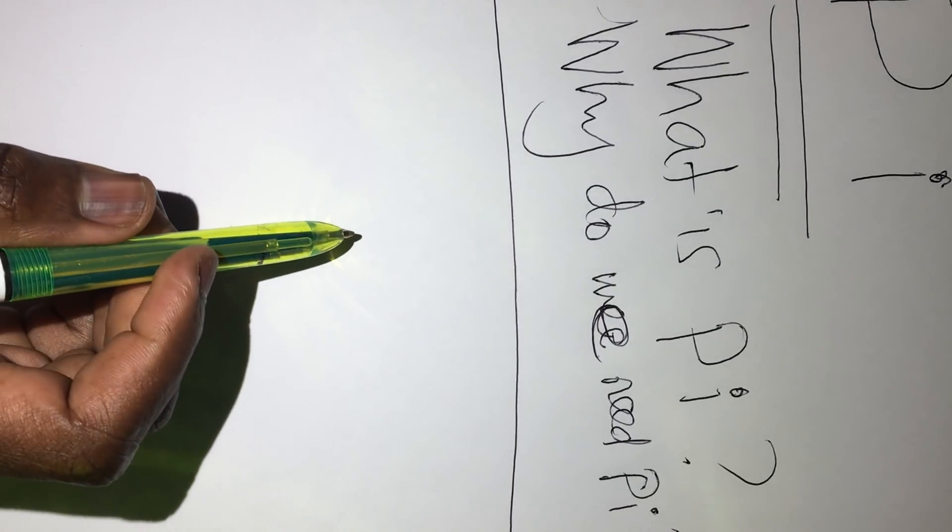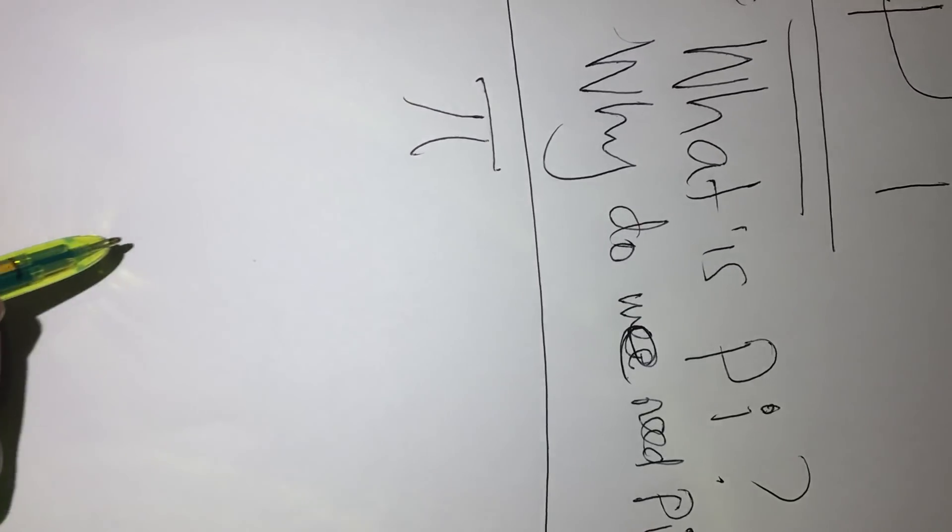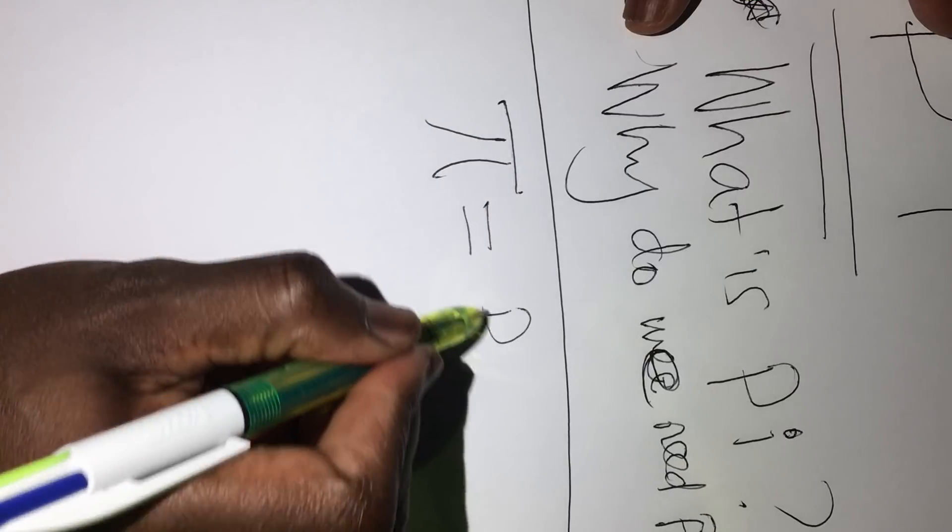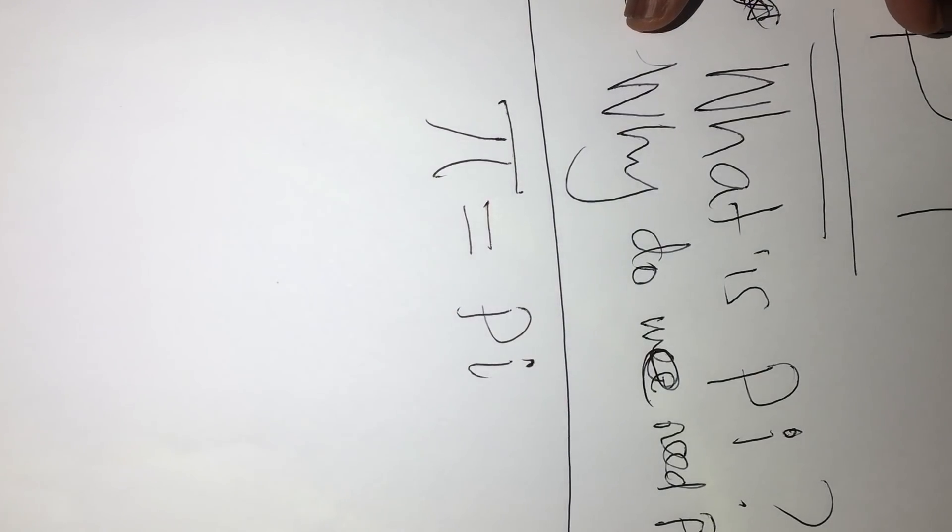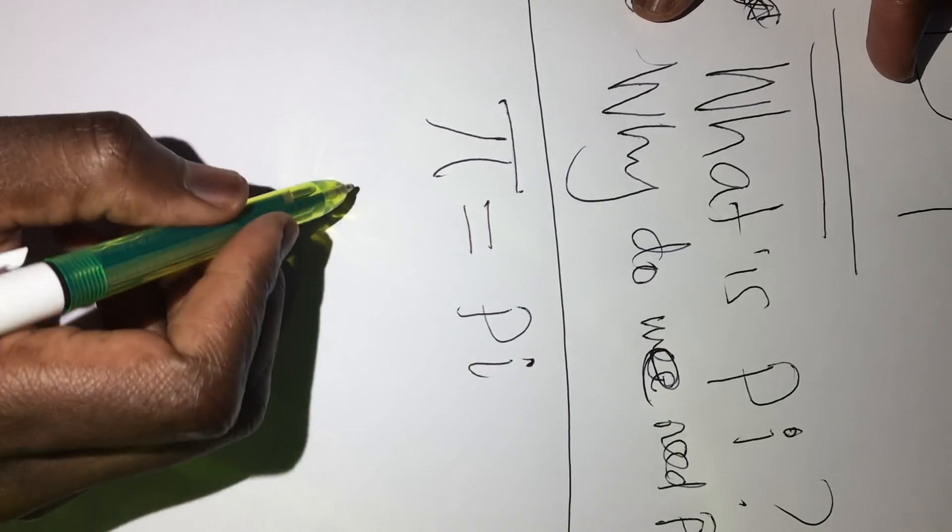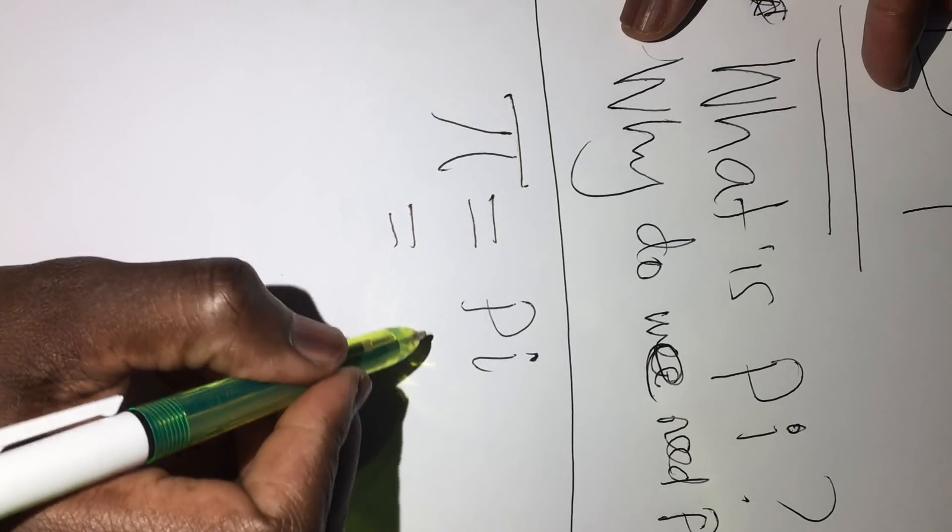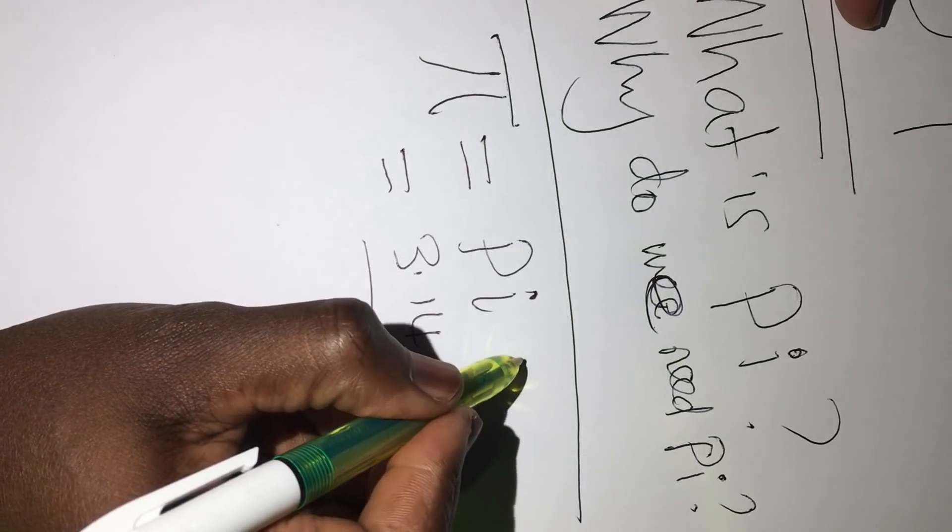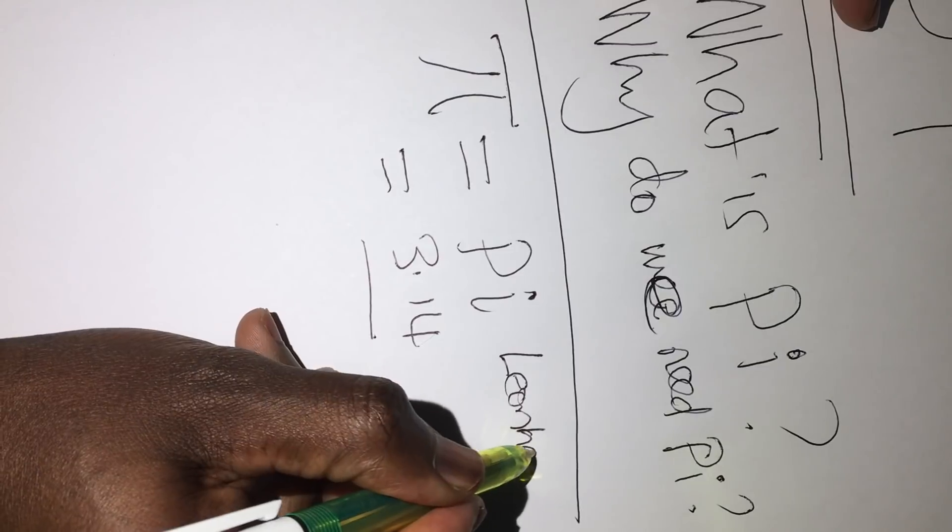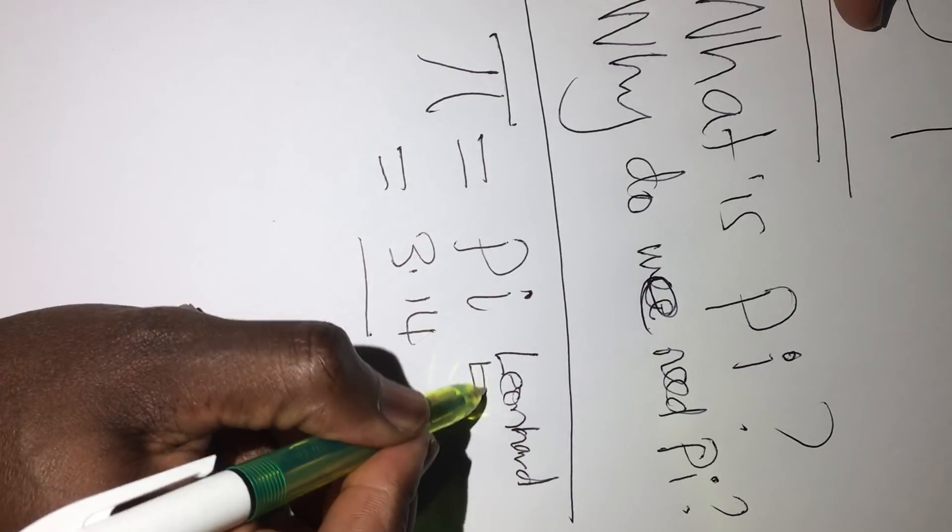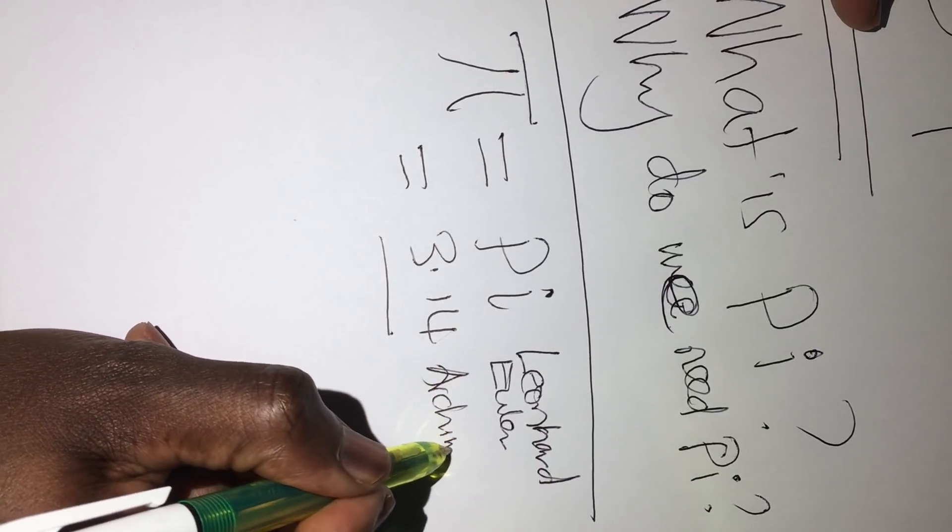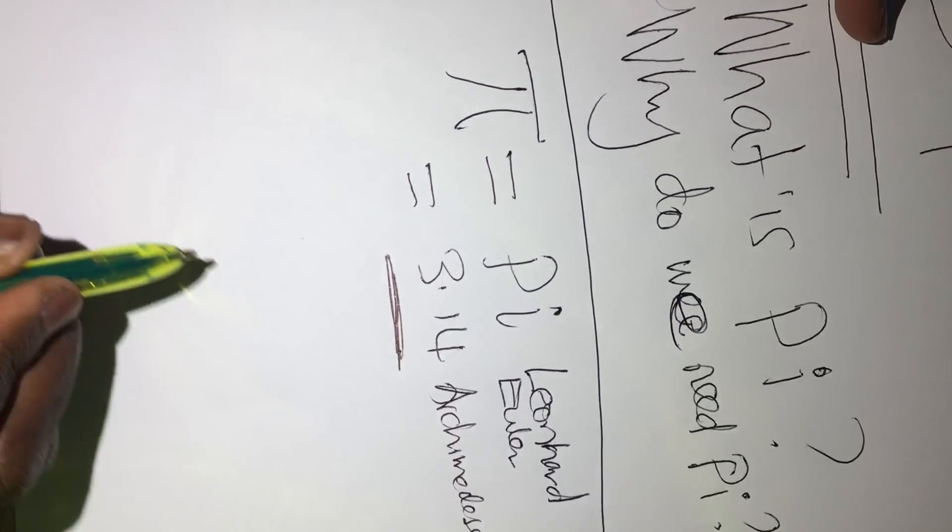As we have seen from the previous video, we have seen that this symbol is given to Pi by Leonard Euler, which has been assigned a value or estimated value 3.14 by Archimedes. So, we can say Leonard Euler and then this one Archimedes estimated Pi.